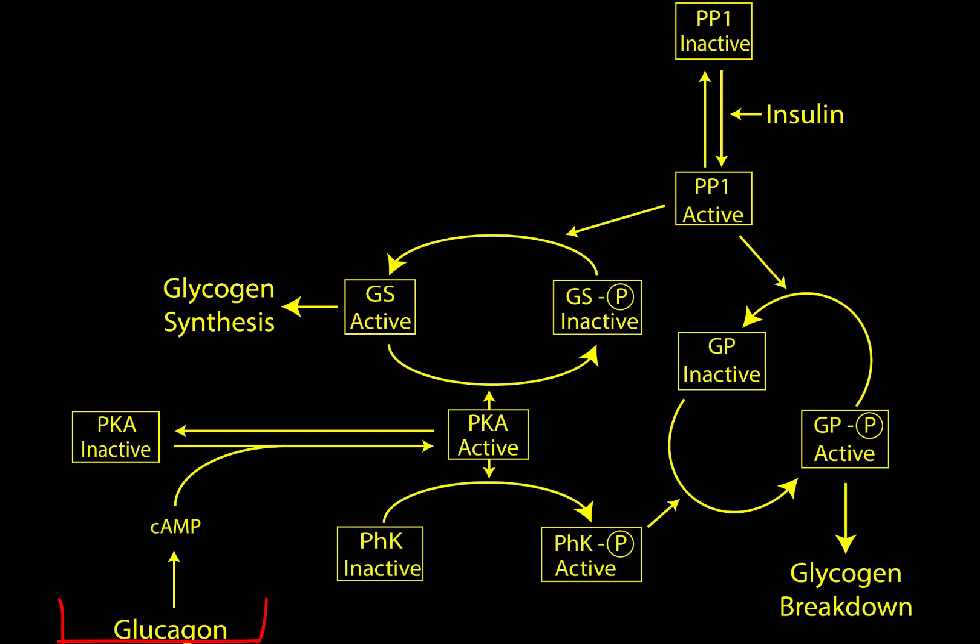Glucagon, which is synthesized in response to low blood sugar, leads to glycogen breakdown, therefore mobilization of sugar. Whereas insulin, which is secreted in response to high blood sugar, causes glycogen synthesis and prevents breaking down more glycogen.